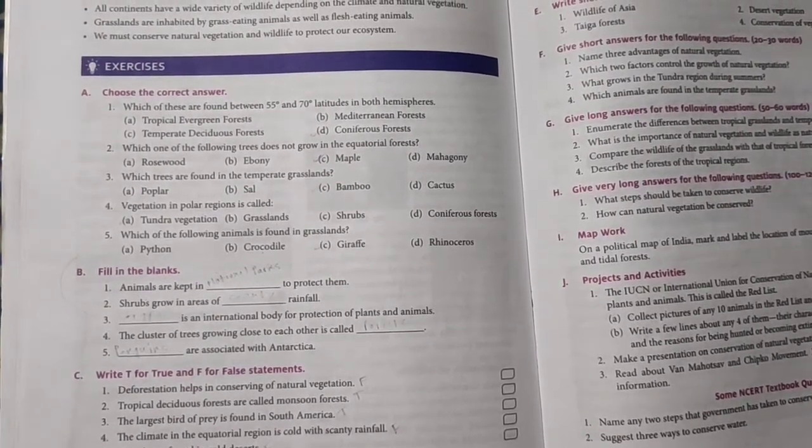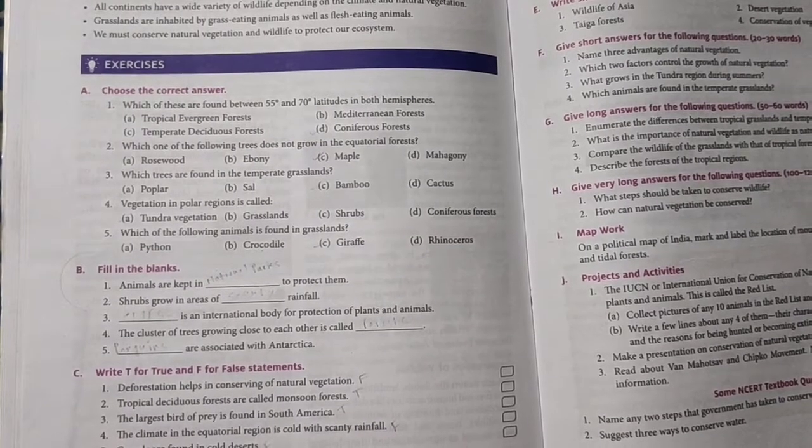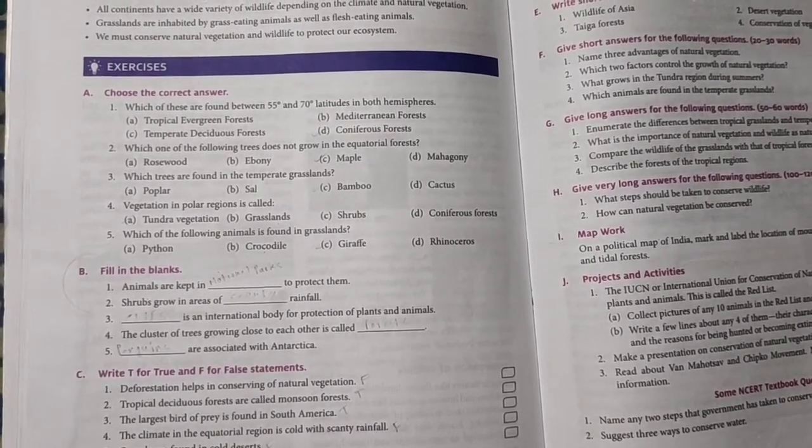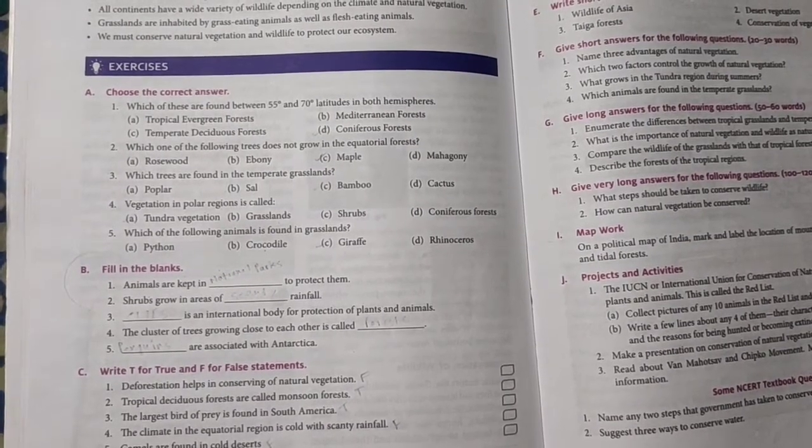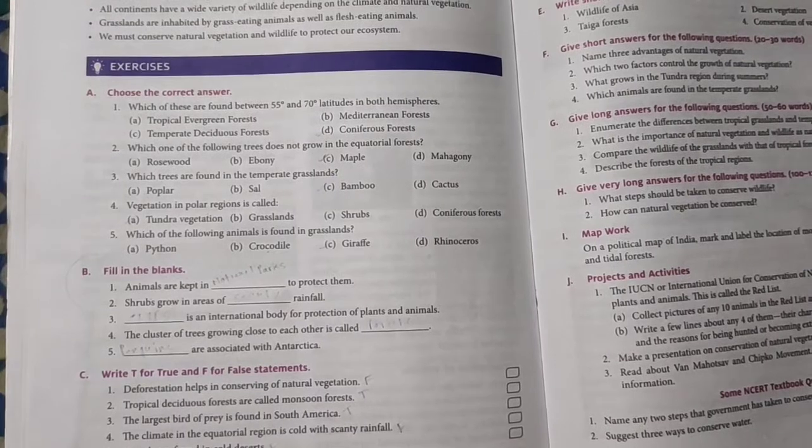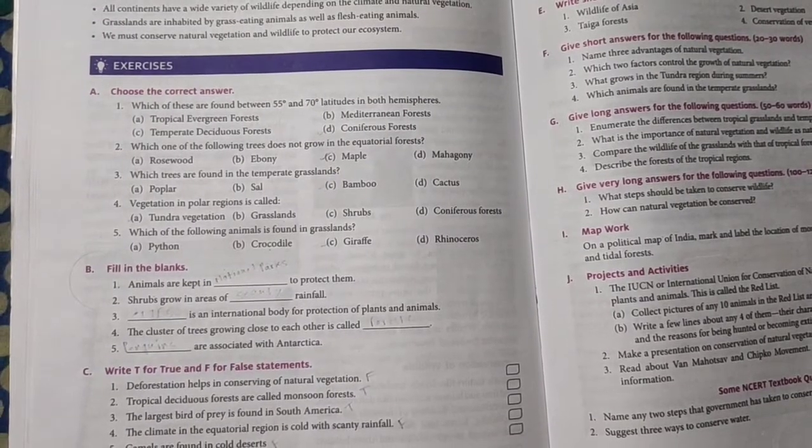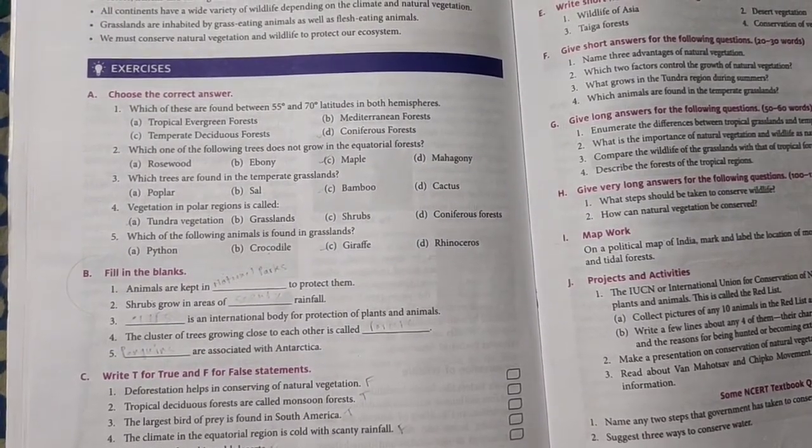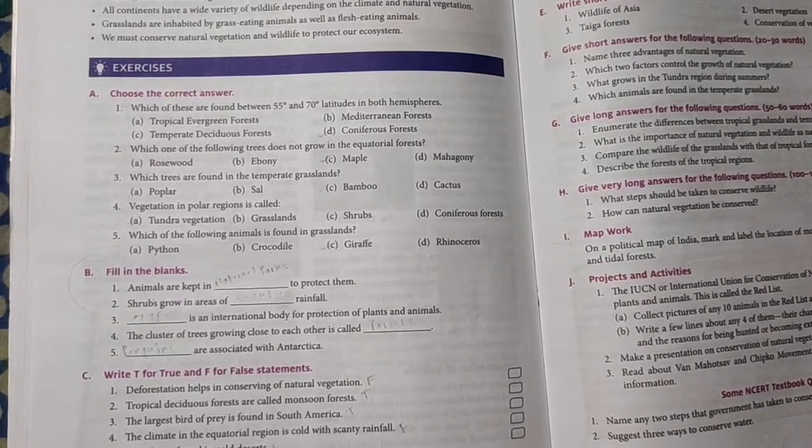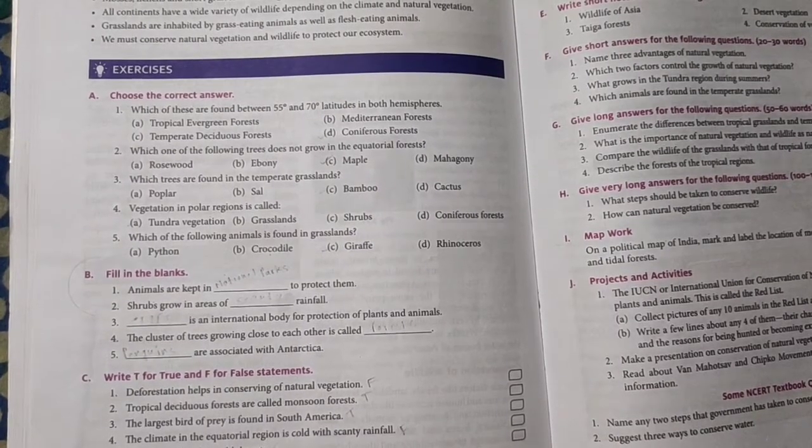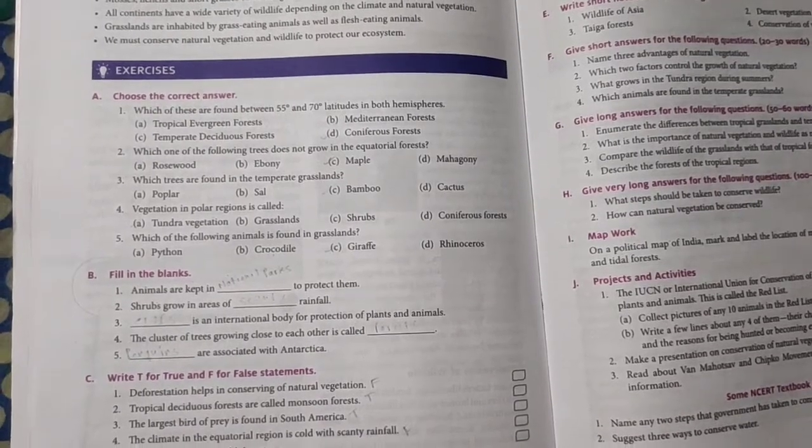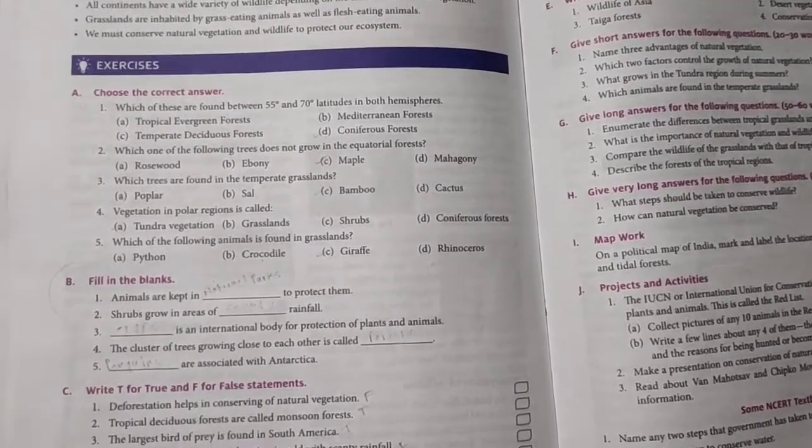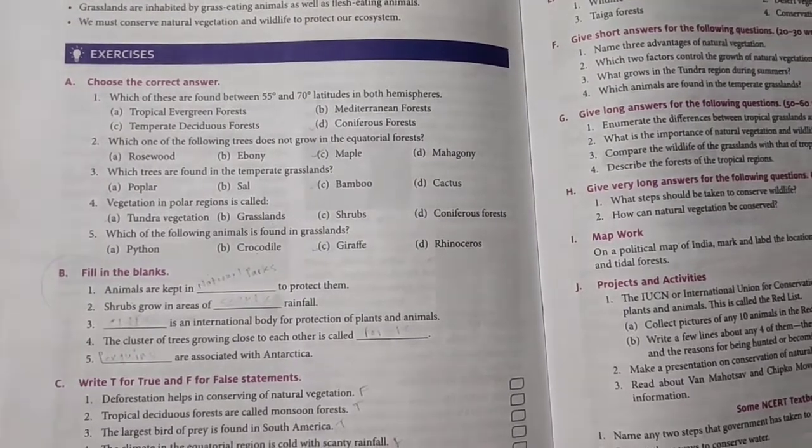Second question: which one of the following trees does not grow in the equatorial forest? As you know, equatorial forest lies in the middle of the earth, and because there is heavy rainfall, most of the trees are hardwood trees. Options are rosewood, ebony, maple, and mahogany. There is only one tree that is not hardwood - maple. So the answer will be maple.